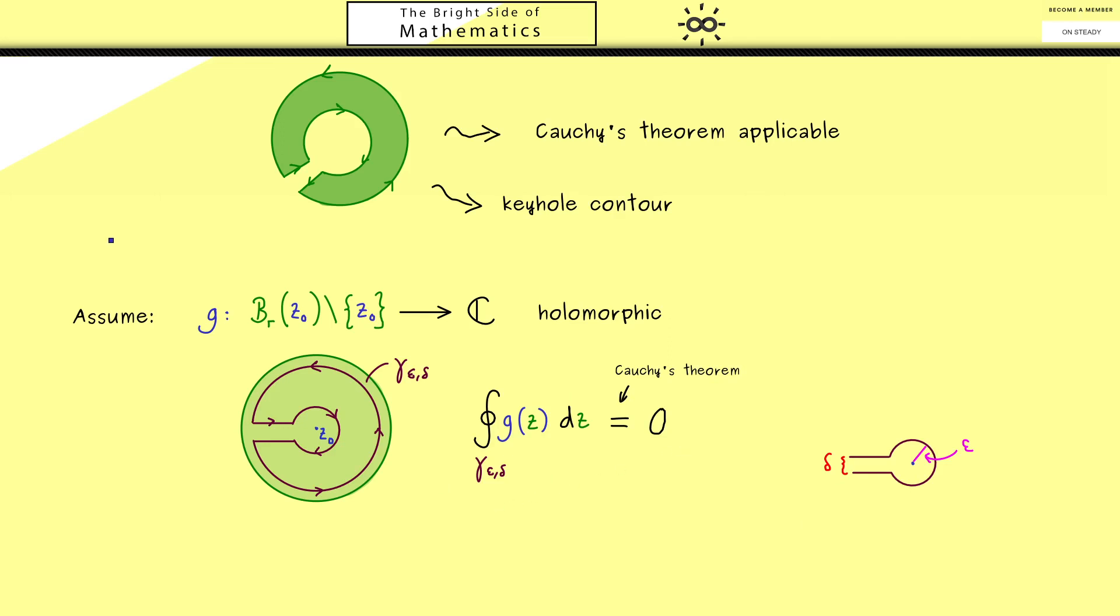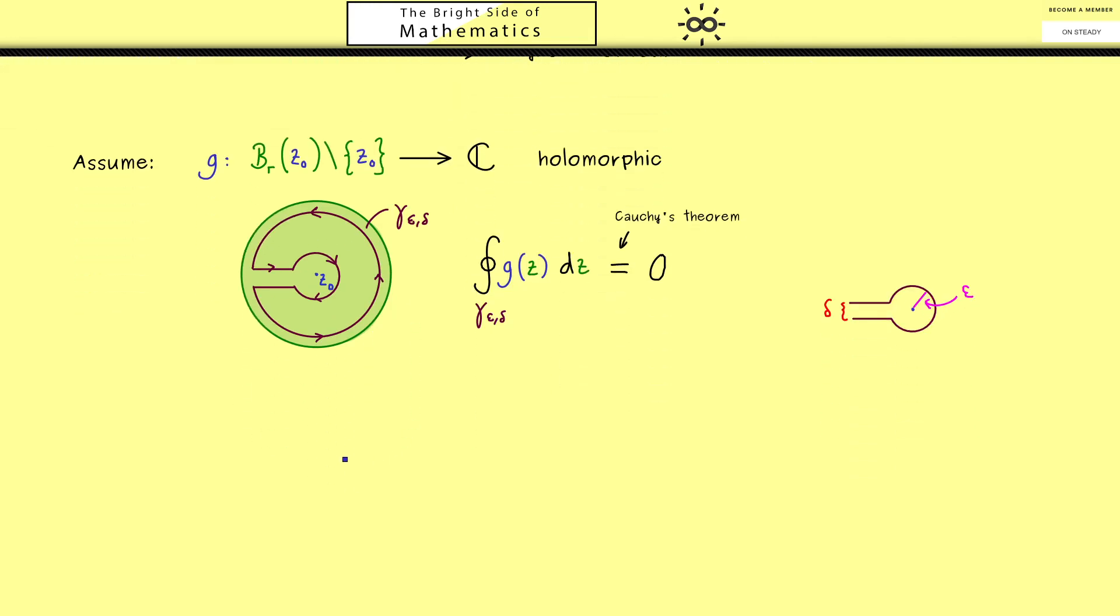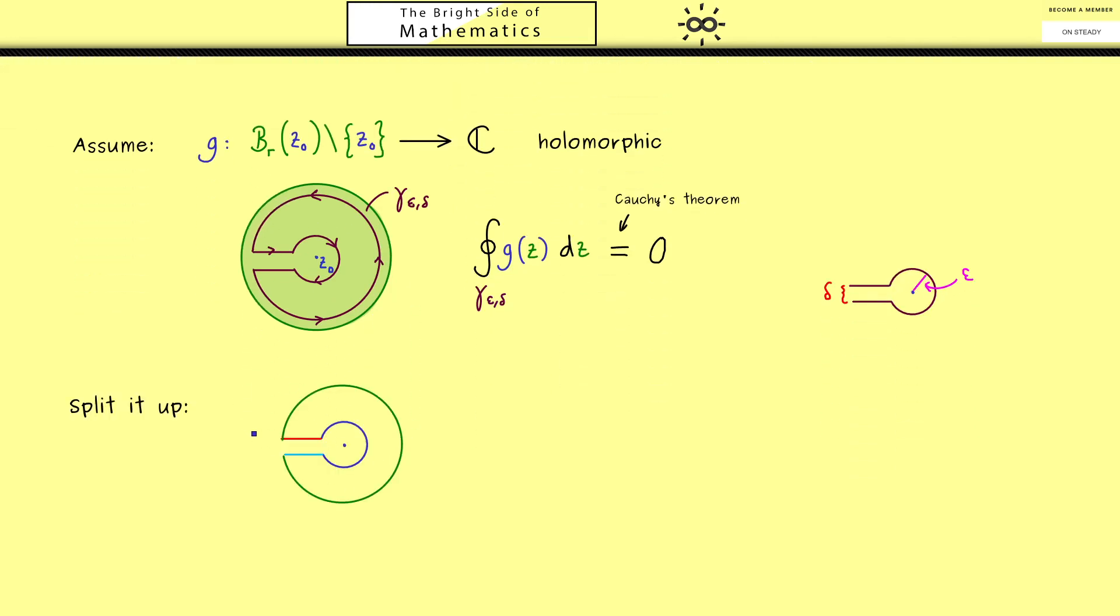That's not new, but now we want to use that and split the integral up into four parts. And I think it's clear how we do it. We take the outer circle, the two lines here, and the inner circle. Then I would say let's give them names where we use upper indices. Hence the outer circle should be gamma 1. Then comes the first line, which is gamma 2. Then the inner circle, which is gamma 3. And then the last line, gamma 4.